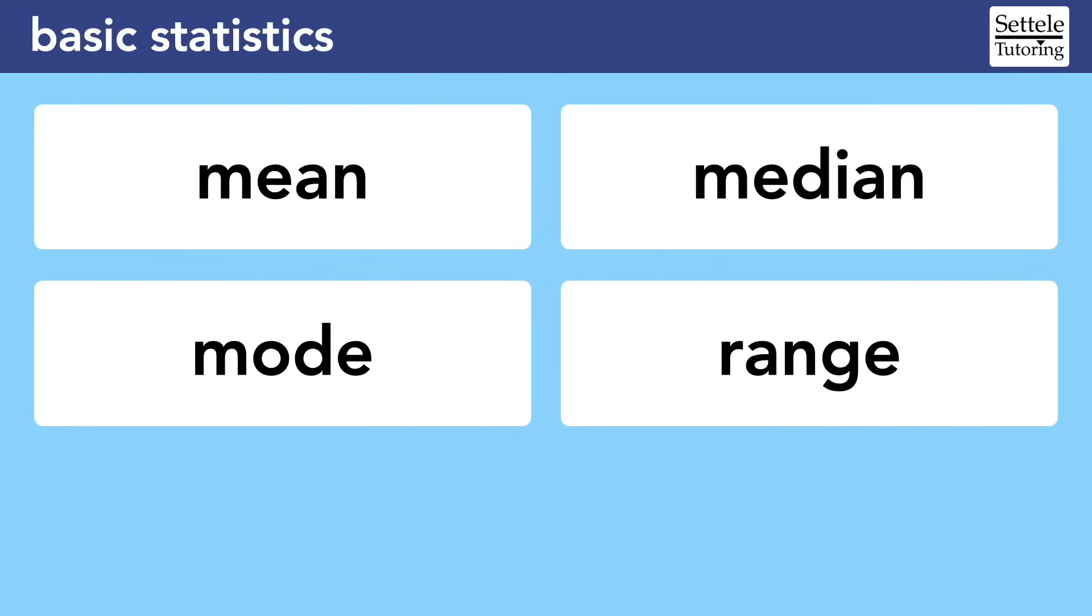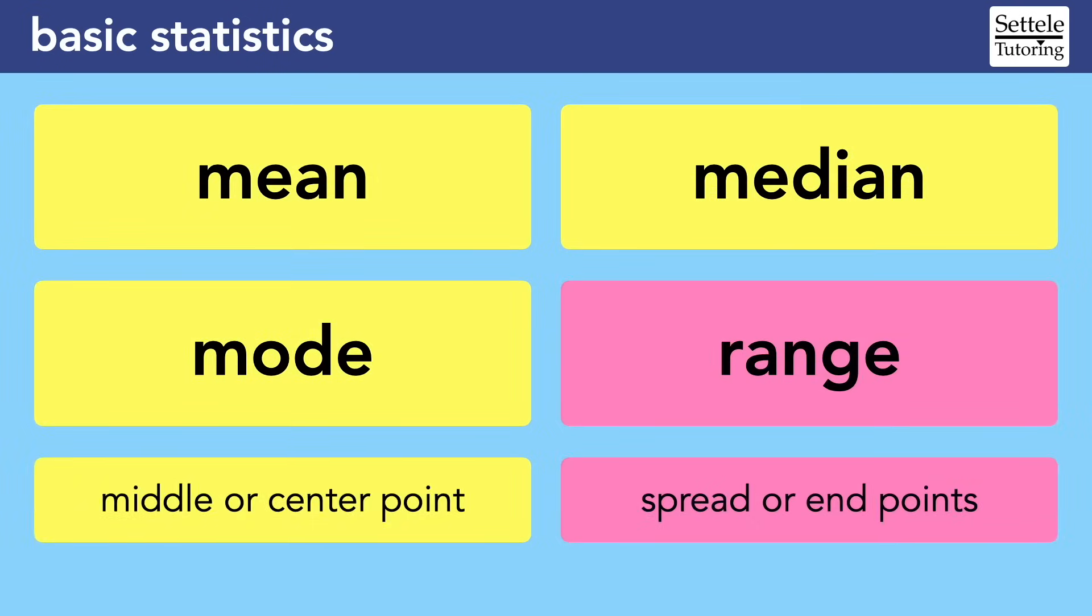Like I said at the beginning of the lesson, memorizing these four concepts should get you through most statistics questions on the SAT. But to give you another way to think about them, it's helpful to group them by what they tell us about a set. Mean, median, and mode are three different ways of understanding the middle or center point of a dataset. They will almost always be different values, but they still attempt to summarize a dataset by focusing on some sort of middle. The range, on the other hand, is trying to describe the spread or end points of a dataset. Standard deviation is also a way to understand the spread of a dataset, but that's a separate lesson, and it's worth watching if you want to answer some of the more difficult statistics questions on the SAT. I hope that this lesson was enough to get you started.